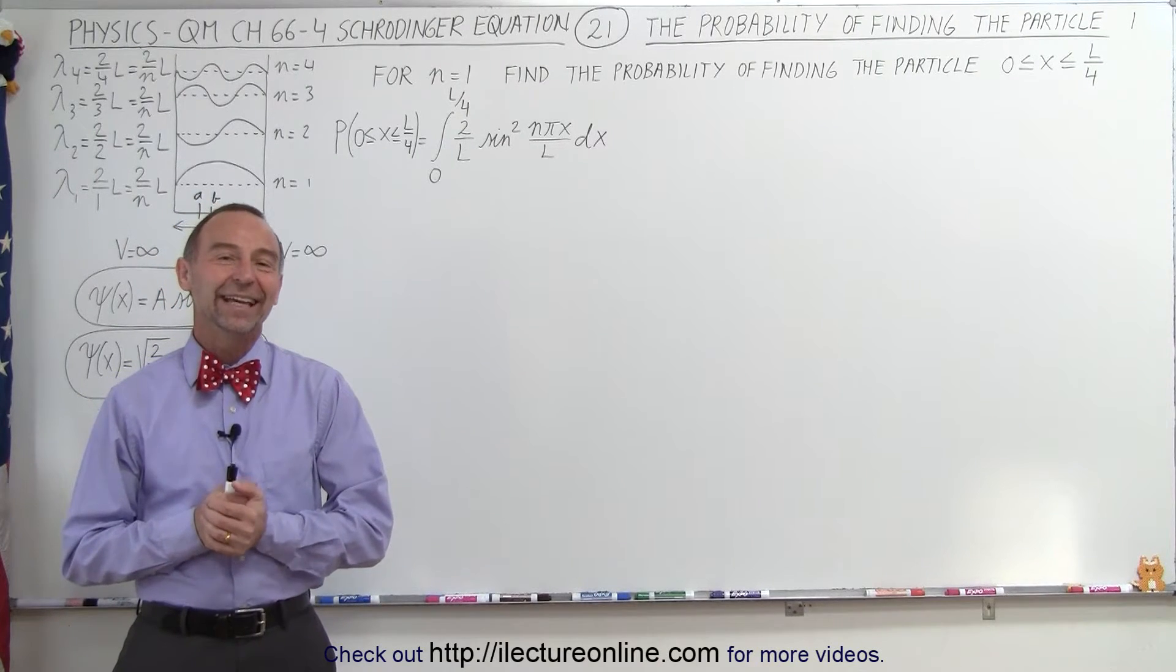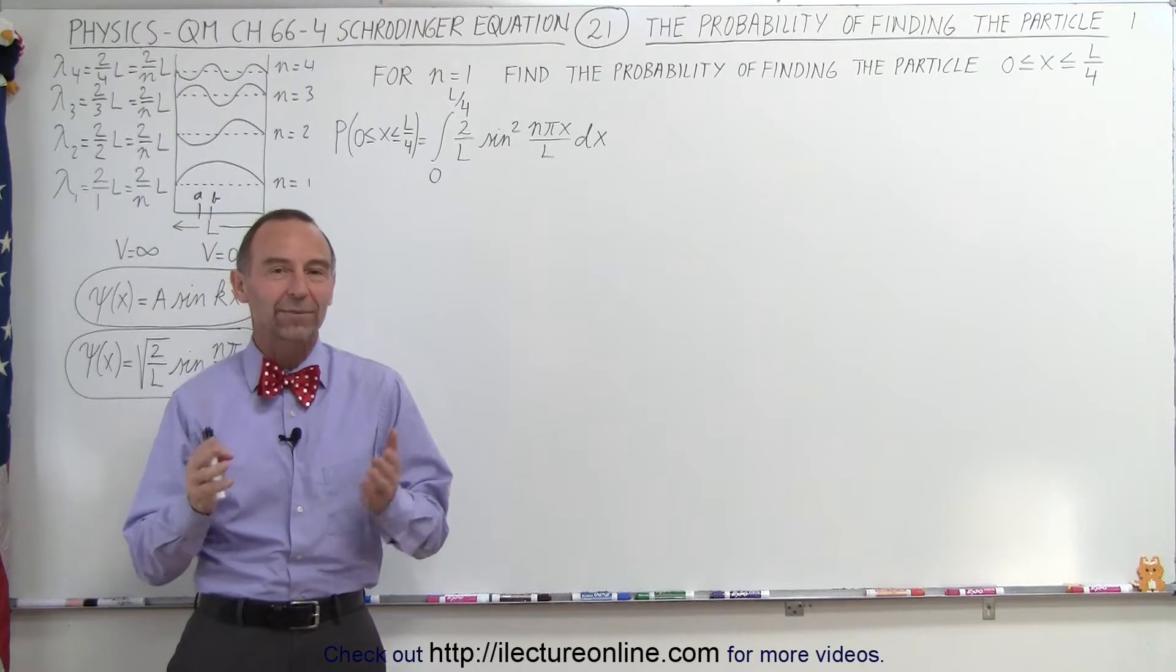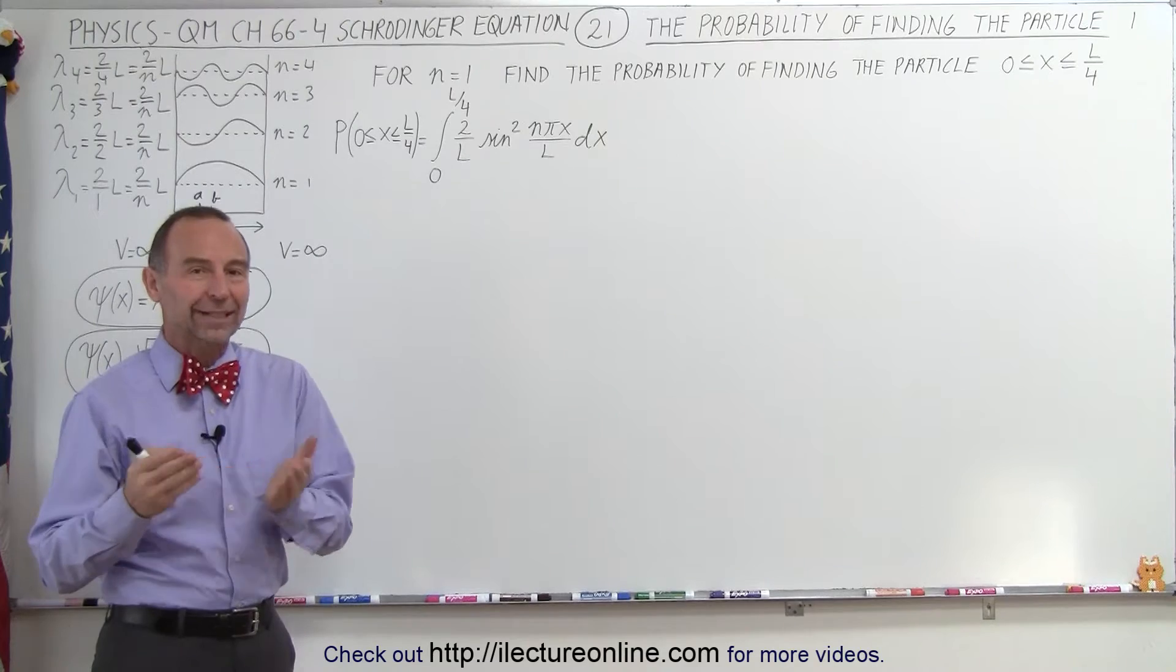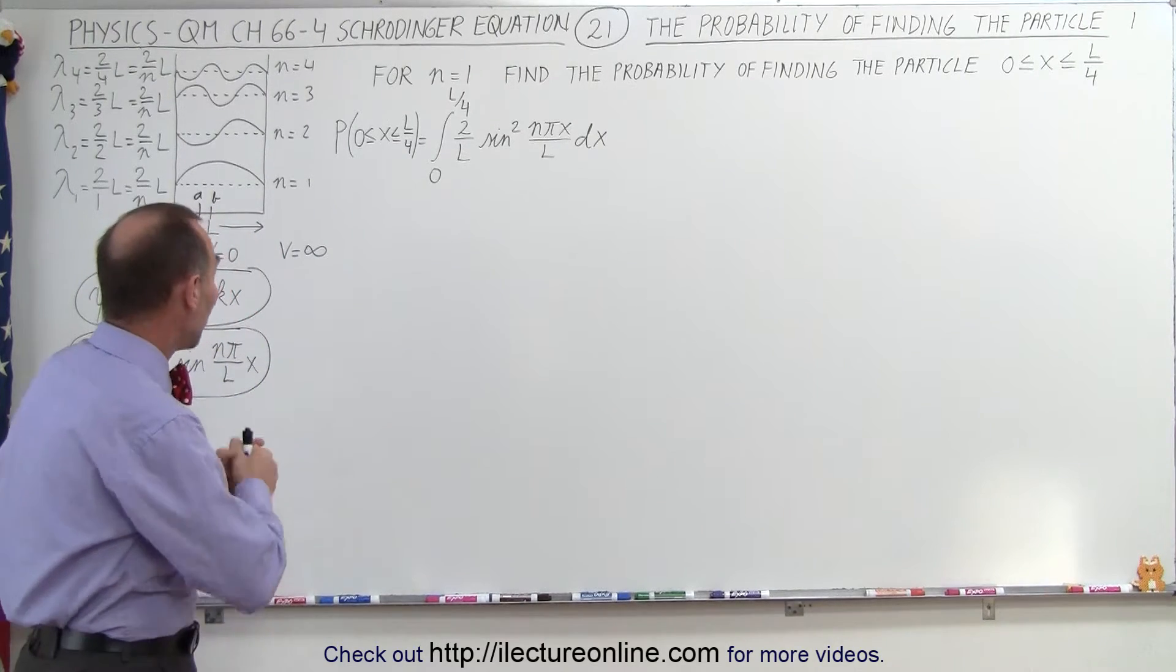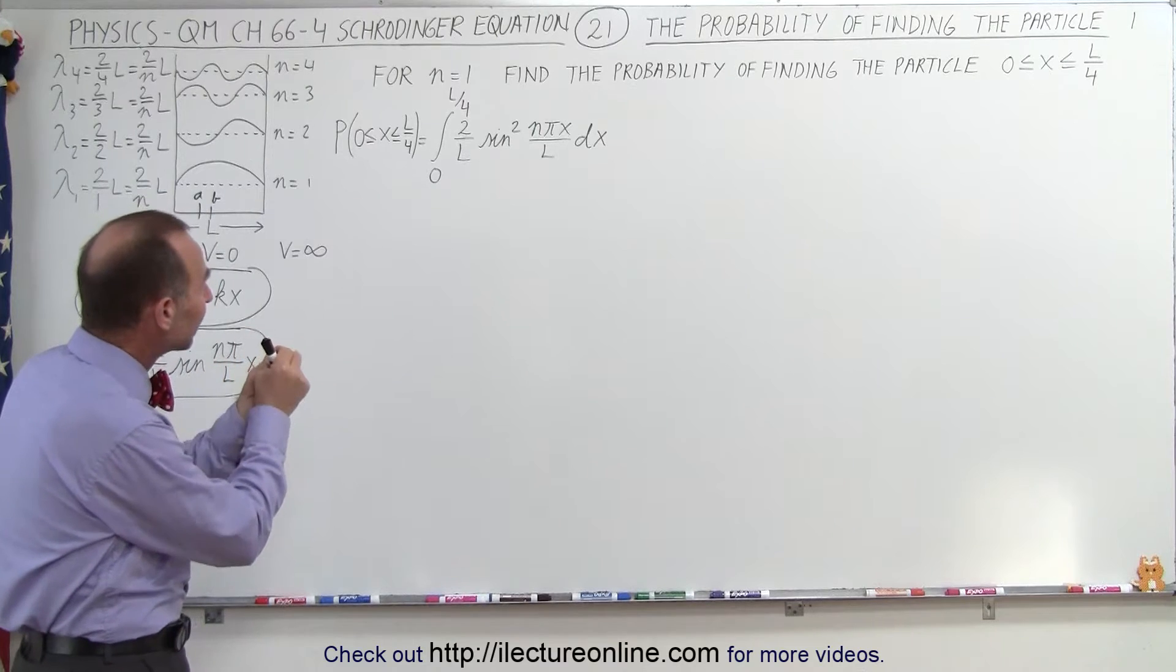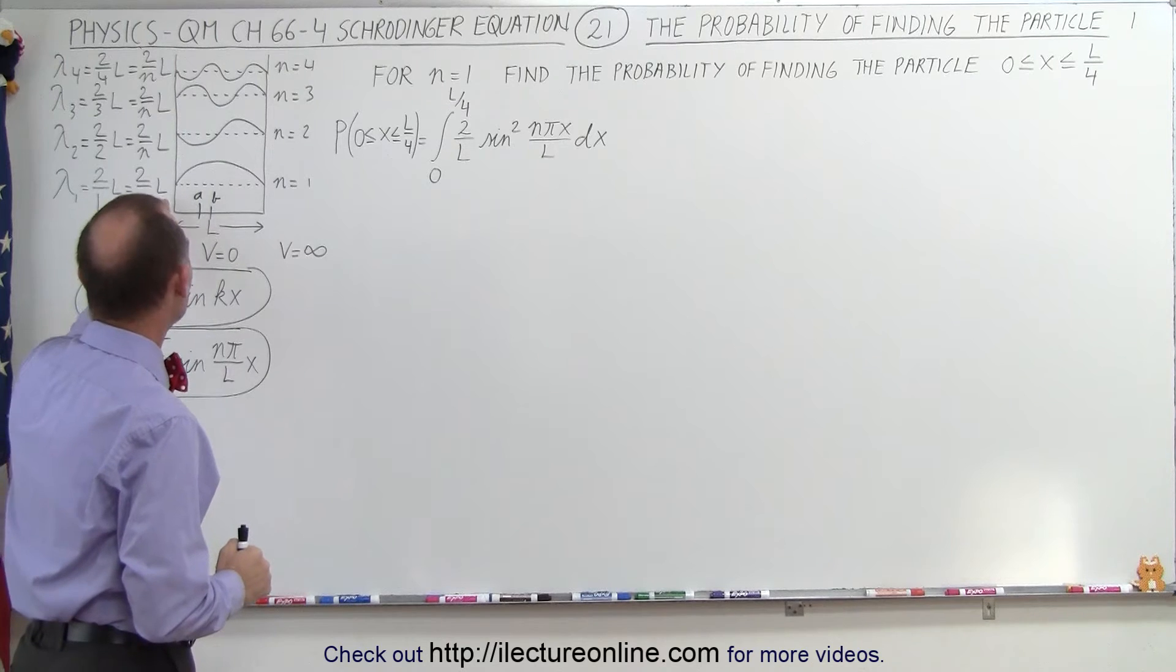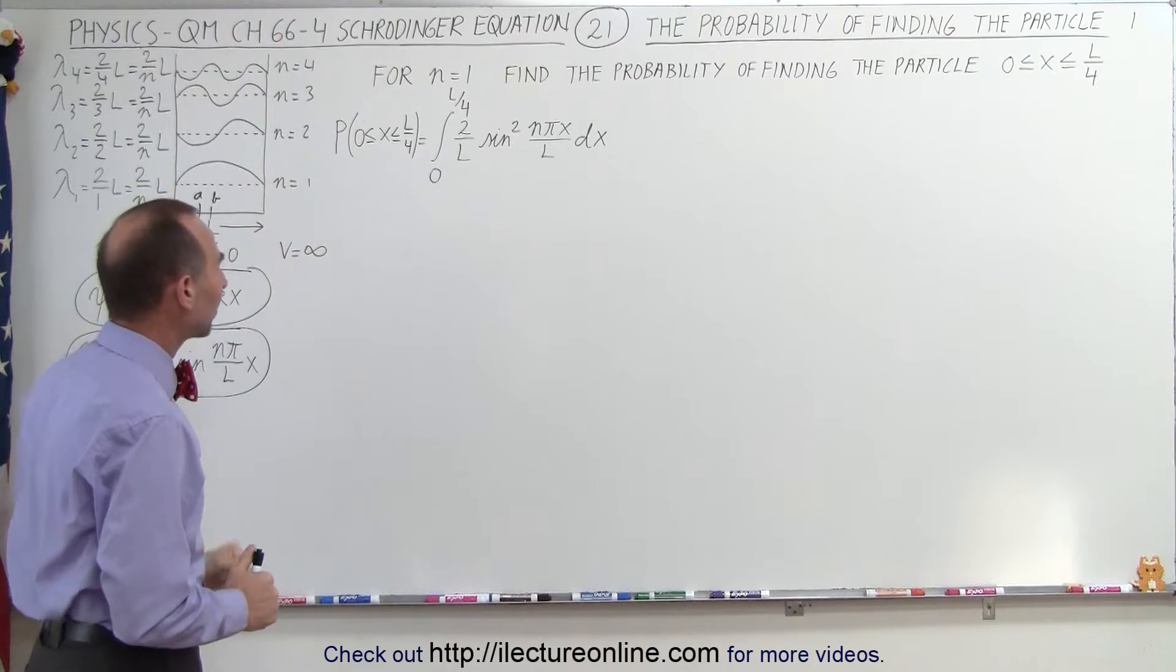Welcome to Electron Line. In the previous videos, we've shown how to find the equation that describes the motion of a particle and the probability of finding a particle in an infinite well, a one-dimensional infinite well. So what we're going to do here is actually calculate the probability of finding a particle in a certain portion of that well from x equals 0 to x equals one quarter the way from the left to the right side of the well.